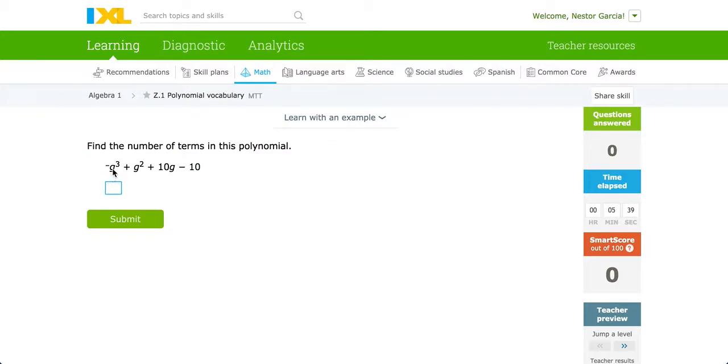First we have negative g cubed. The plus and minus, remember, is the beginning of a new term. So we have a plus 9 to the power of 2 as our second term, plus 10g as our third term, minus 10 as our fourth term. There are four terms in this polynomial.